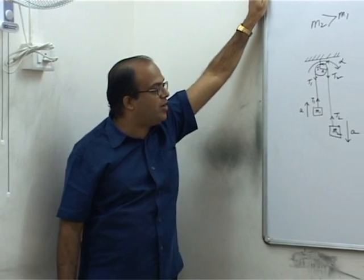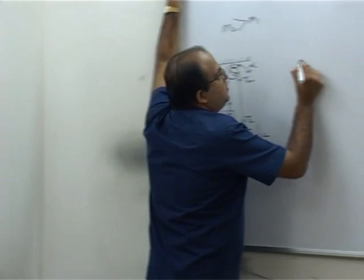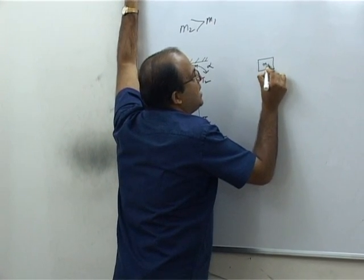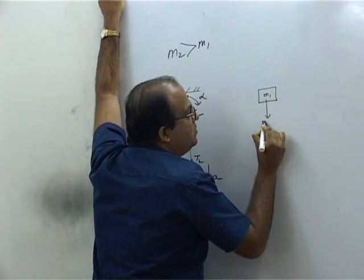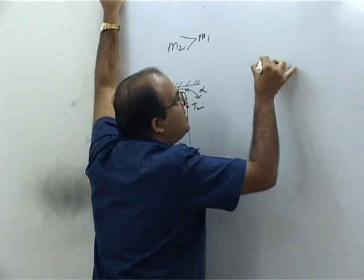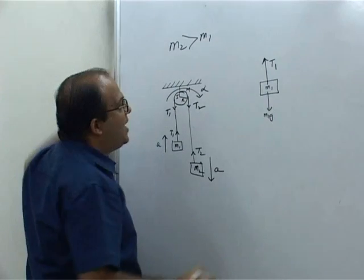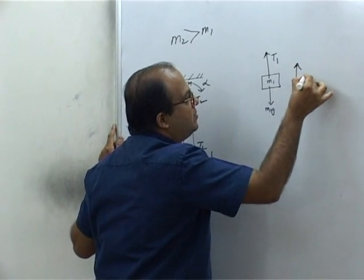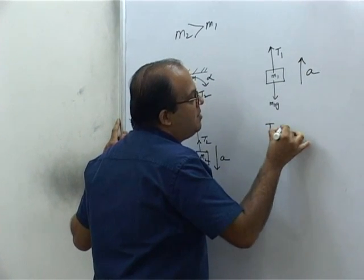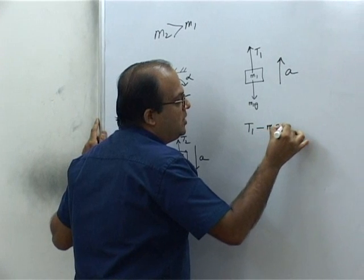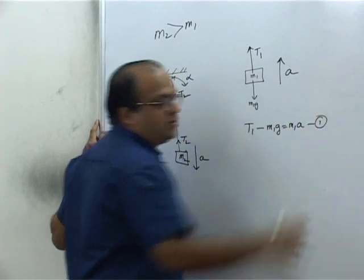Now we will draw the free body diagram of M1. M1G is acting down, tension T1 is acting up, and the acceleration is upwards. So T1 minus M1G is equal to M1A. This is the first equation.